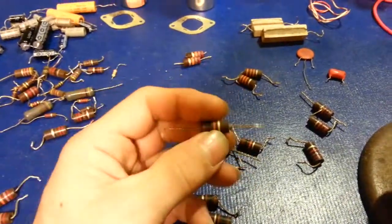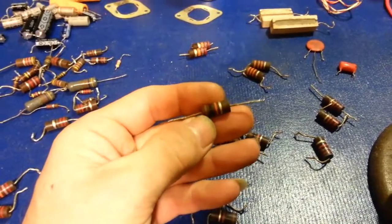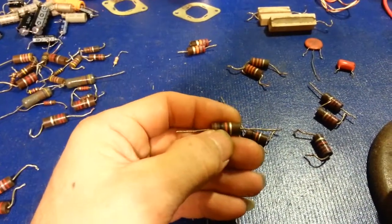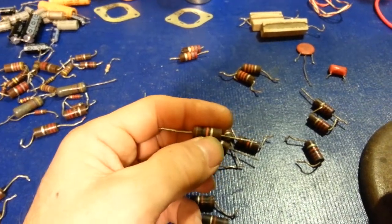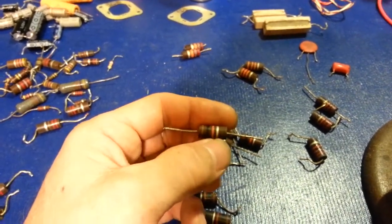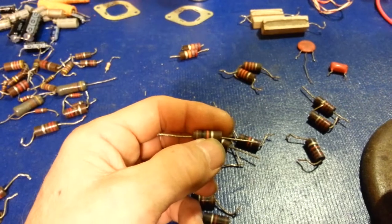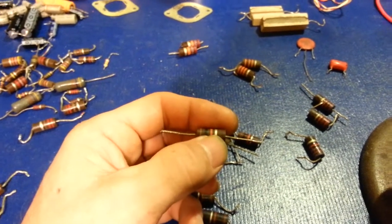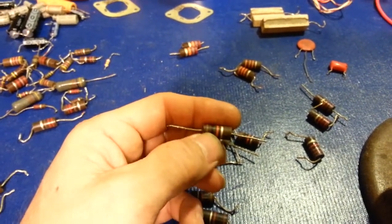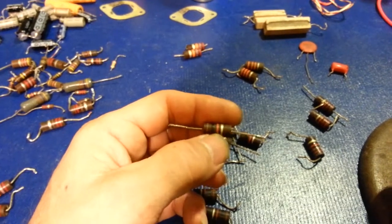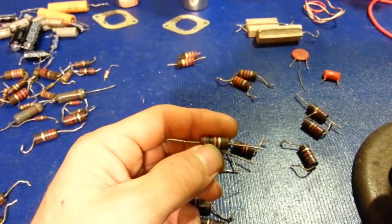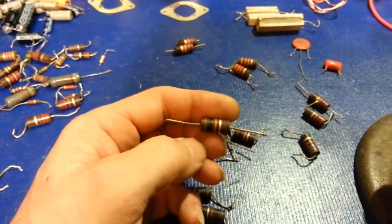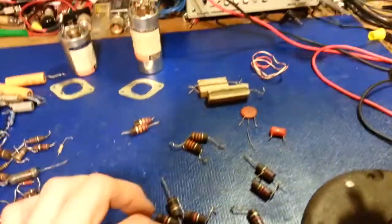So in the case of these resistors, brown, black, orange, silver, that's one, zero, and then the orange makes this a 10K or 10,000 ohm. So a 10,000 ohm resistor, plus or minus 10%. So 10% of 1,000 is going to be 100. So this resistor should not measure more than 1,100 ohms or less than 900. That would keep it within its tolerance range.